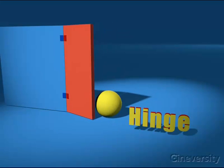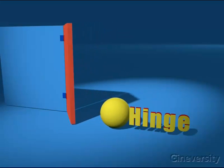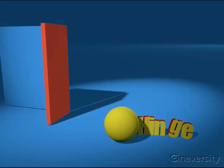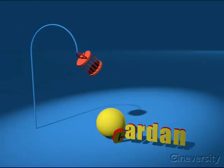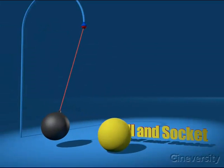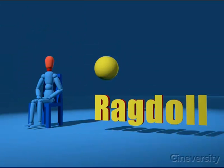Within R12, you can define connectors that act like a hinge, cardan joint, ball and socket, or ragdoll.